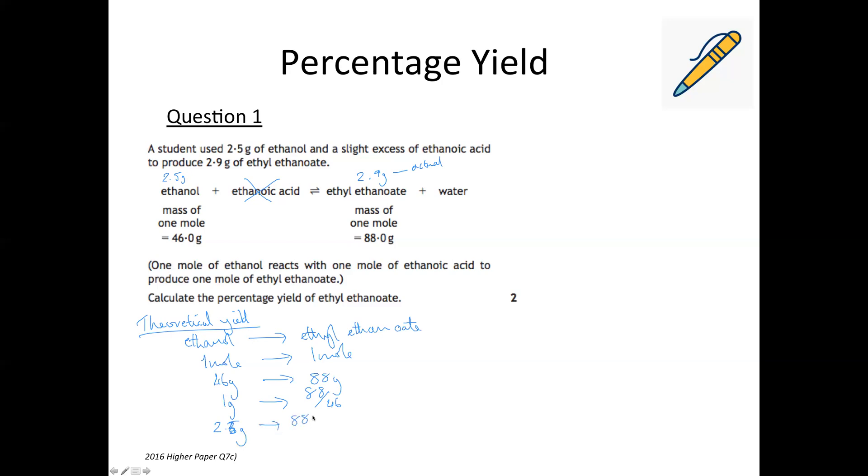So that's 88 over 46 times 2.5. So if you put that into your calculator, 88 divided by 46 times 2.5, that is 4.78 grams if you round it to two decimal places. So that is our theoretical yield.